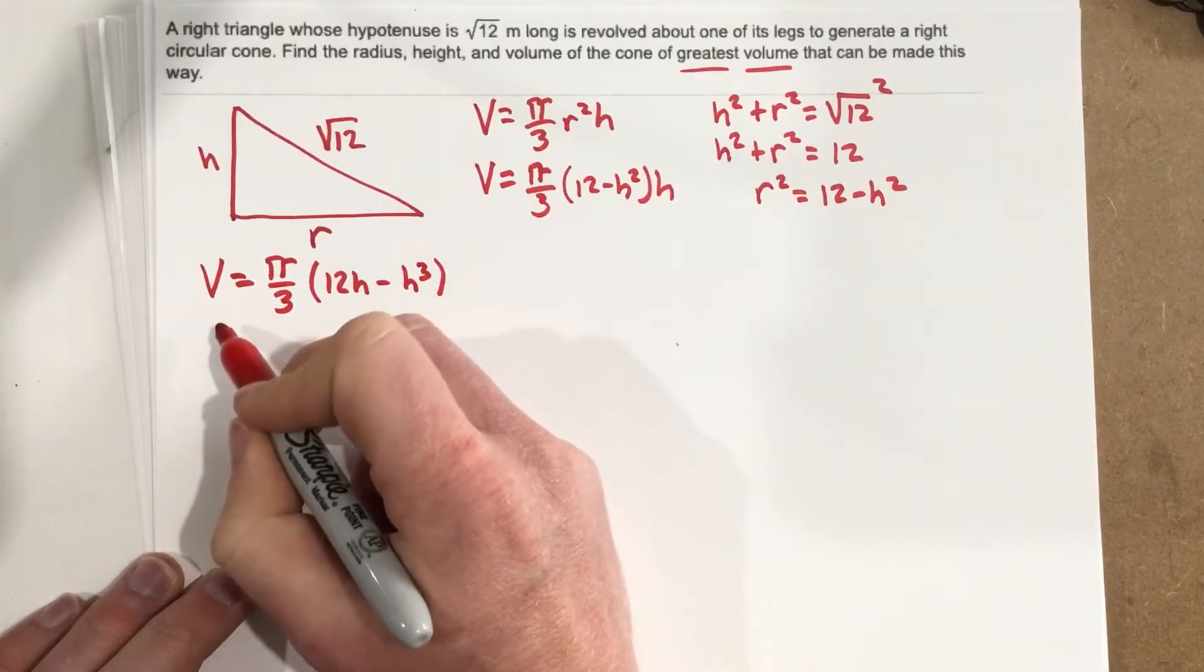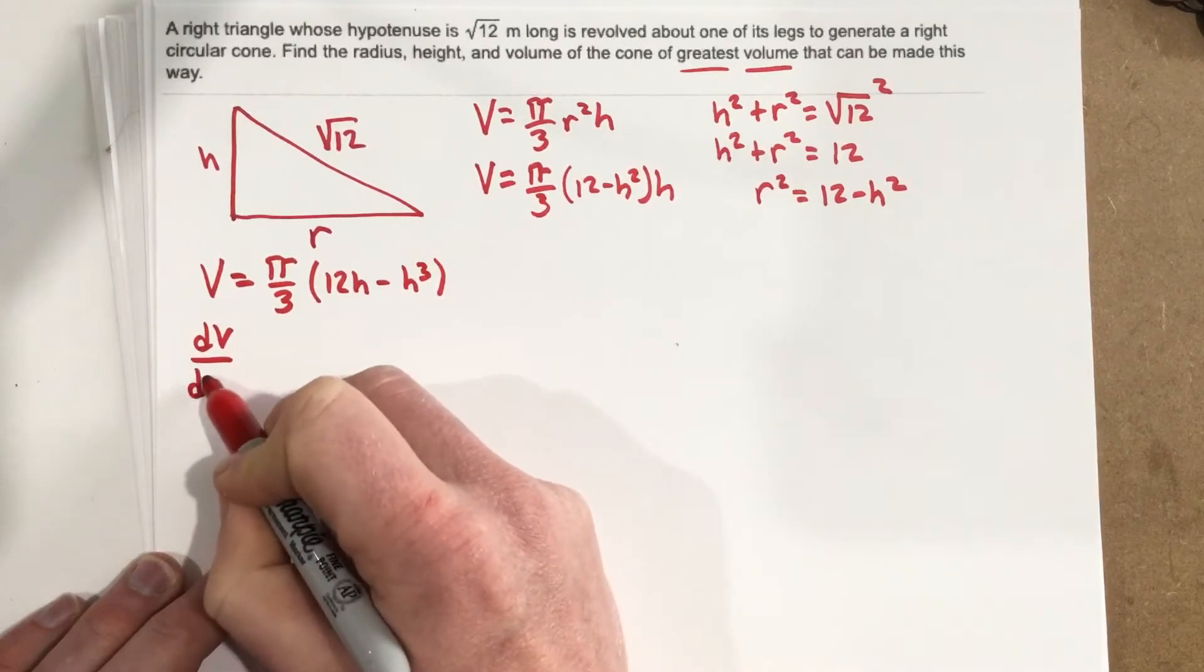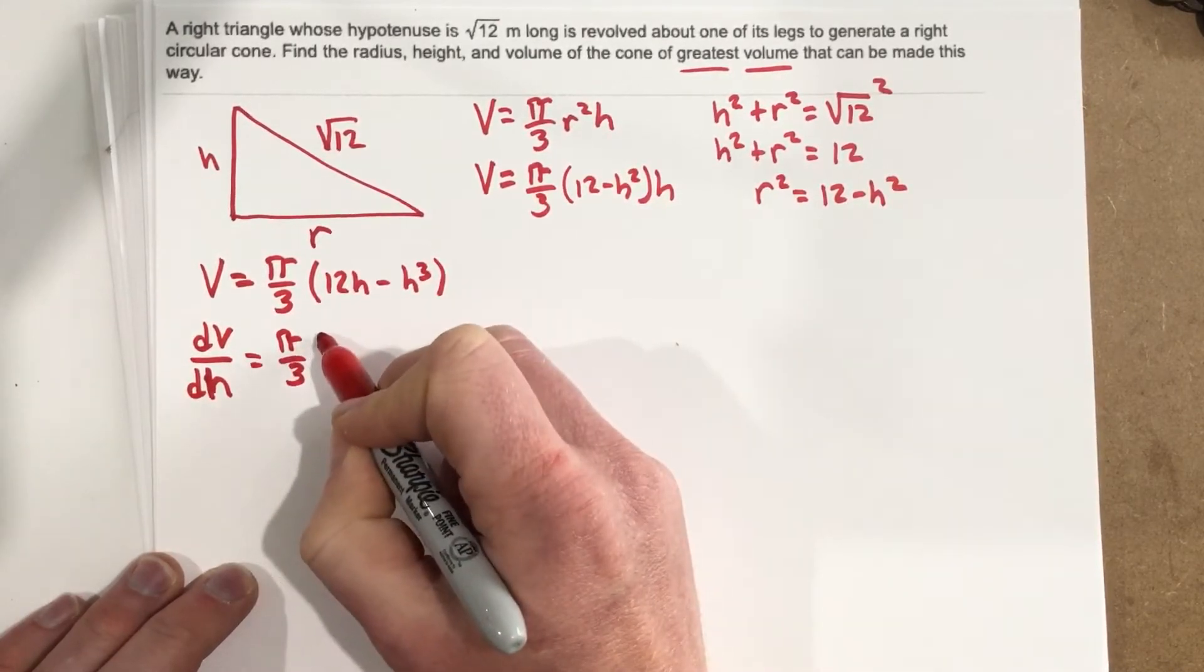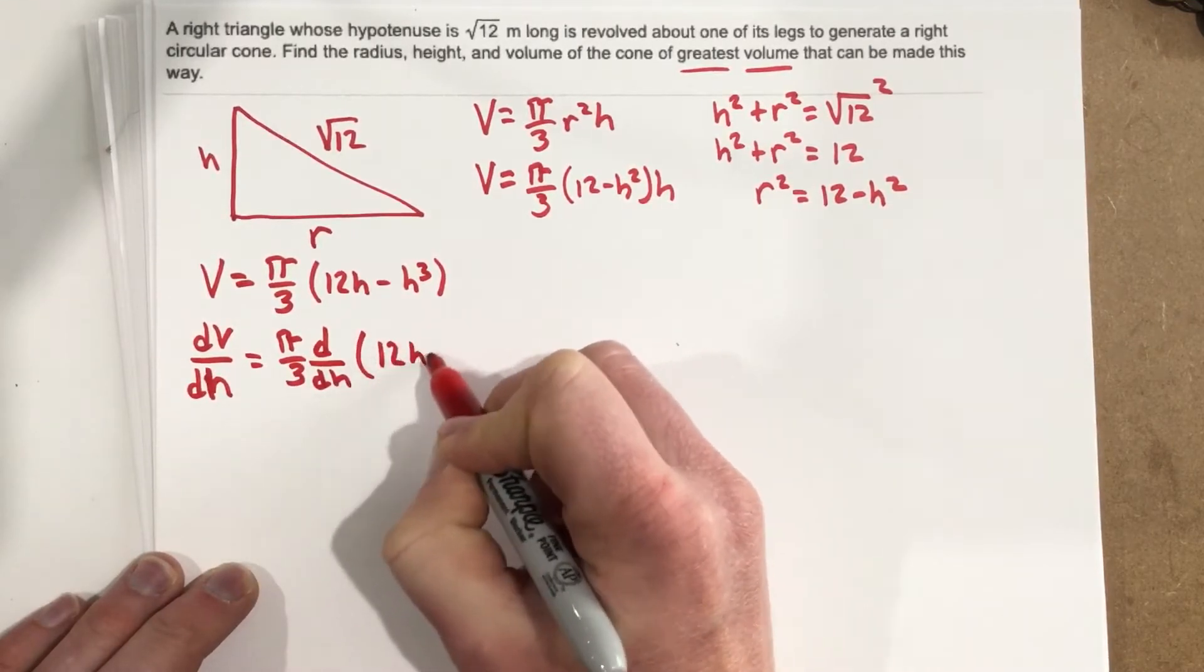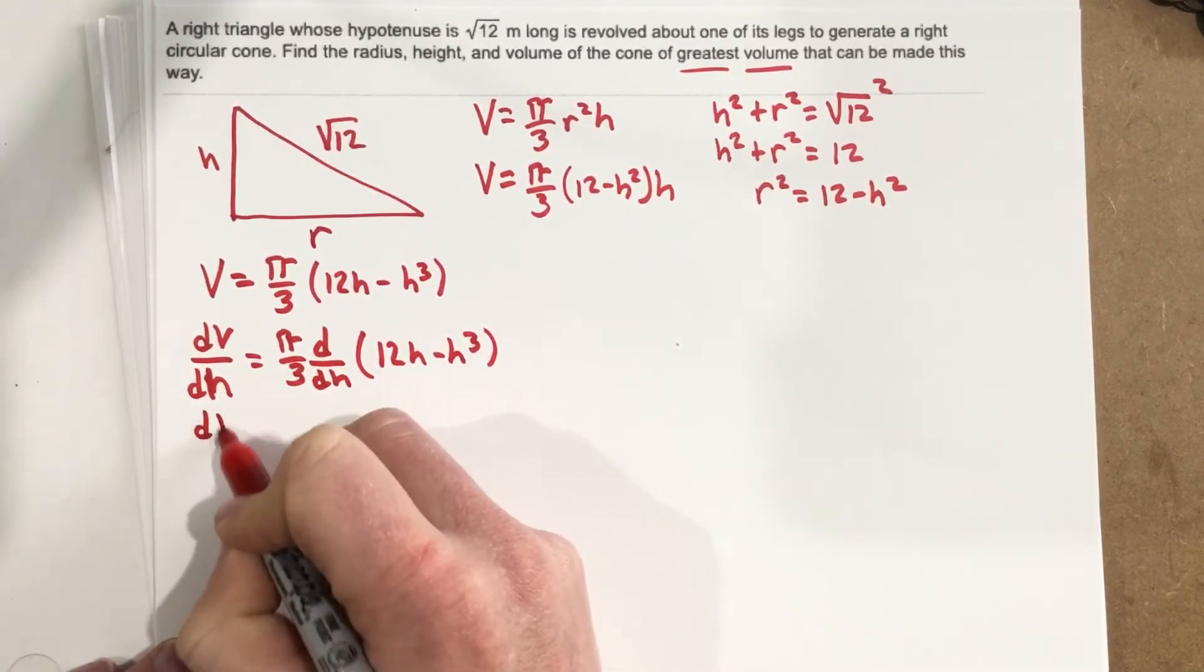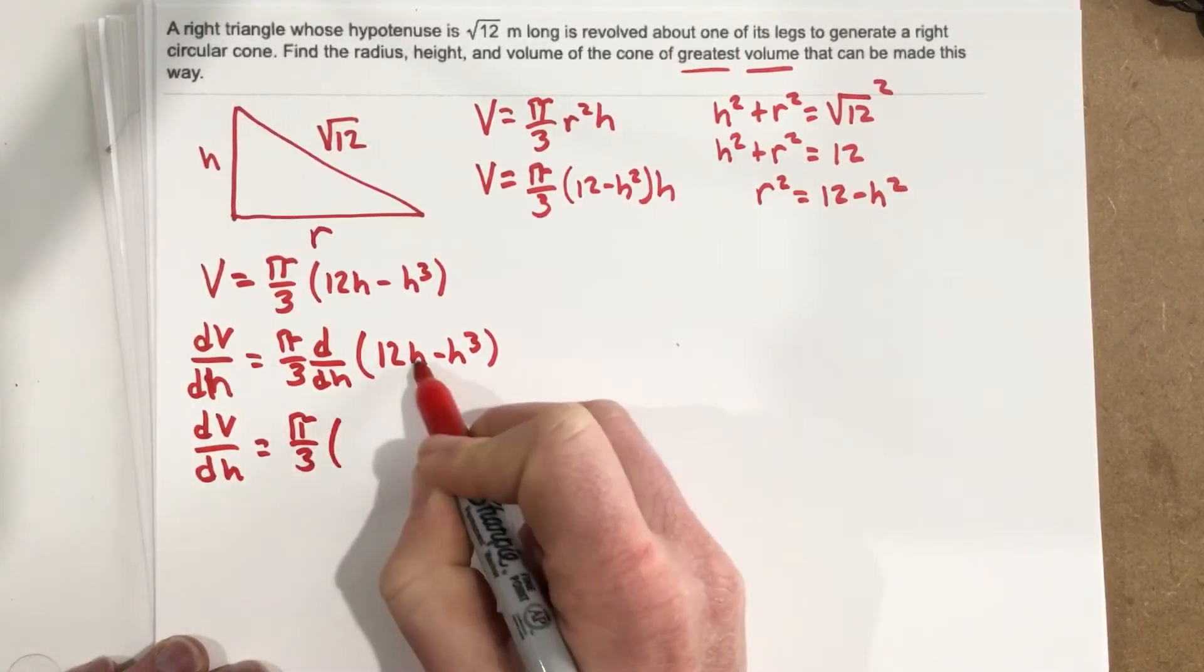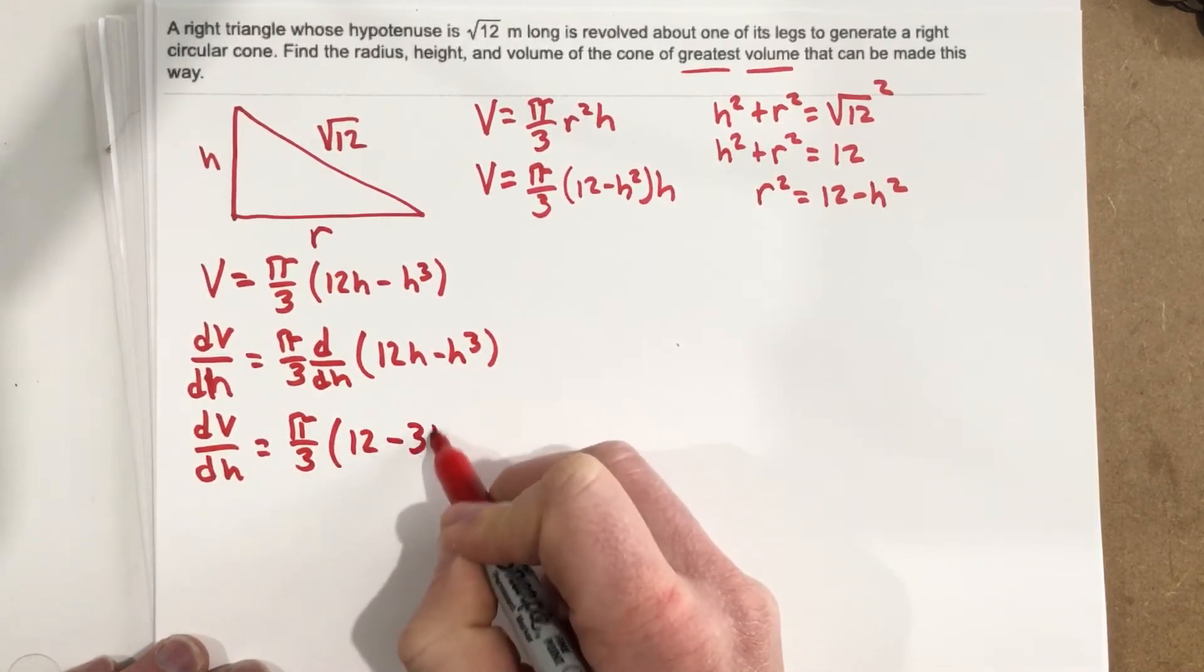We're going to take the derivative of this now, so we're going to say dV/dh = π/3 · d/dh(12h - h³). So then we get dV/dh = π/3 · (12 - 3h²), where the derivative of 12h is 12 and the derivative of -h³ is -3h².